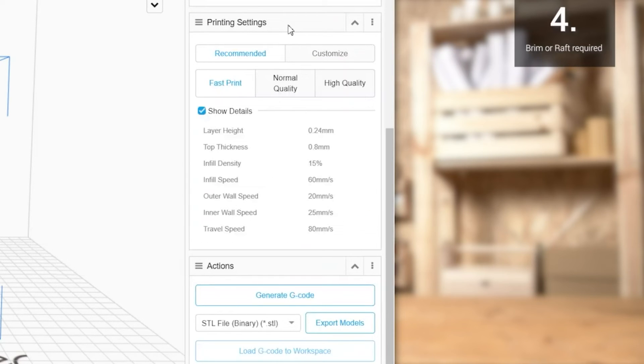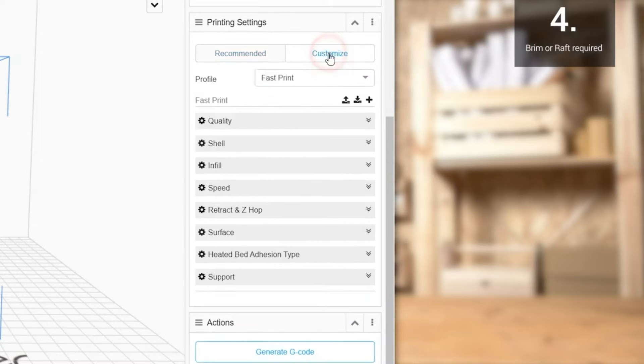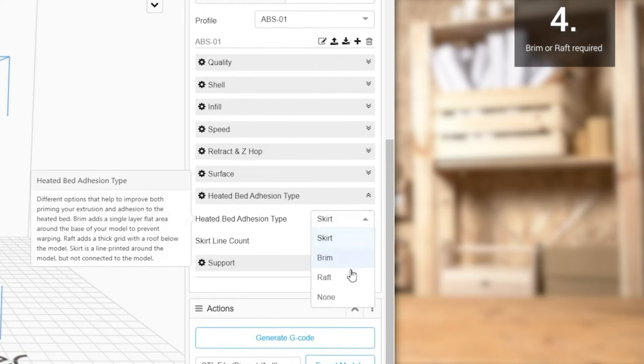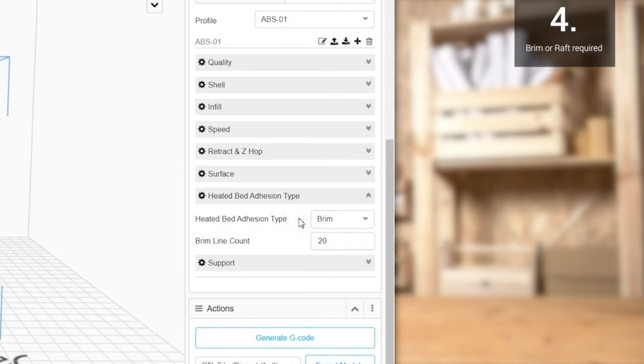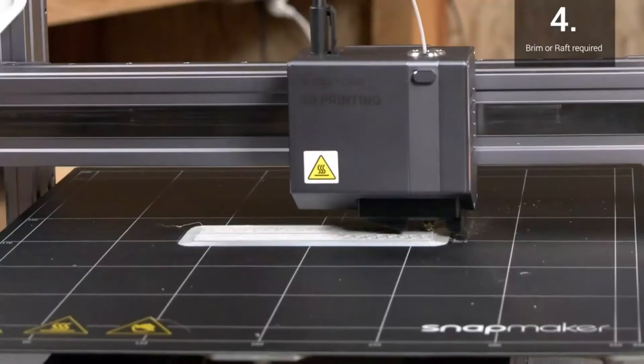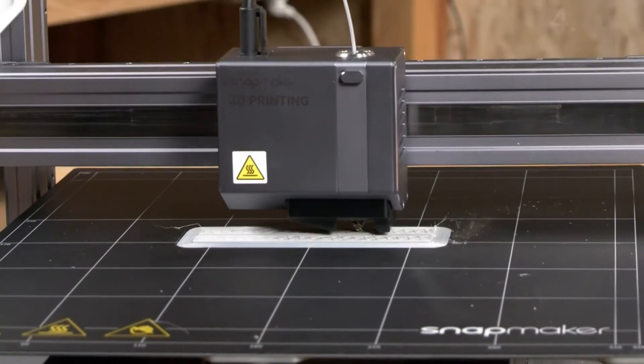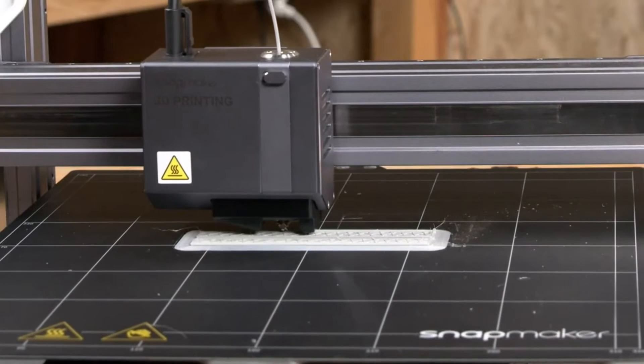When setting the parameters in Snapmaker Luban, you can go to Customize, Heated Bed Adhesion Type, and add Brim or Raft to your print. Both options will create additional surface contact between the print and the bed to help with first layer adhesion. If you can do all of the above, you are almost guaranteed a nice print with ABS.